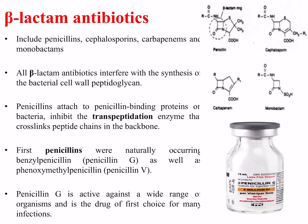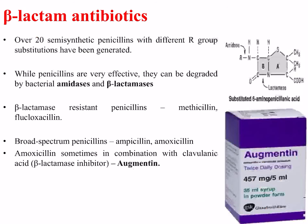The first penicillins were naturally occurring, such as benzyl penicillin (penicillin G) and phenoxymethyl penicillin (penicillin V), as shown in the diagram on the bottom right. Penicillin G is active against a wide range of organisms and is the drug of first choice for many infections. Since the discovery of natural penicillins, over 20 semi-synthetic penicillins with different R-group substitutions have been generated.